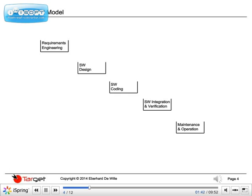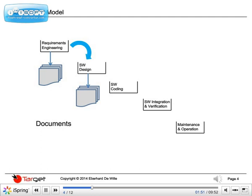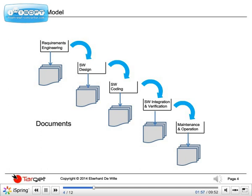The waterfall model is an entirely document-focused model. This means that each phase has a certain document or a set of documents as its output. The documents of the earlier phases usually serve as inputs for the subsequent phases. If the model is applied to other than just software development, there may be other outputs, such as hardware samples or database records, rather than documents.